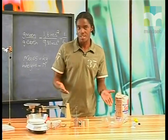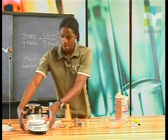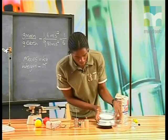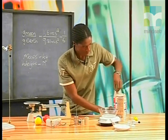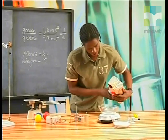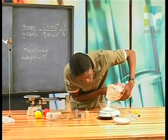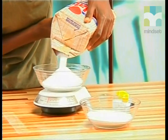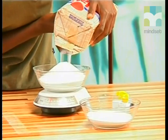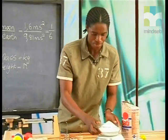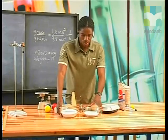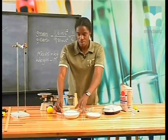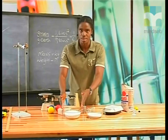Setting the scale back to zero, I pour in 0.5 kilograms of sugar. Now take a close look at these two amounts — you can clearly see that 0.25 kilograms has fewer granules, while 0.5 kilograms has more granules of sugar in it.